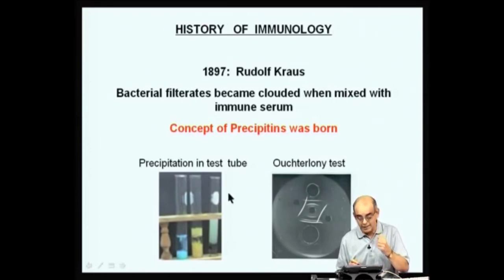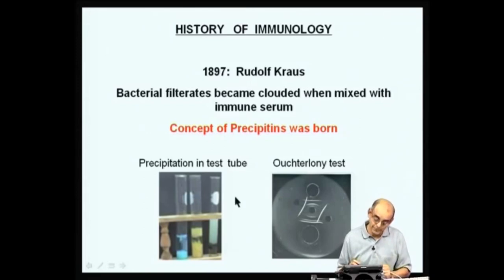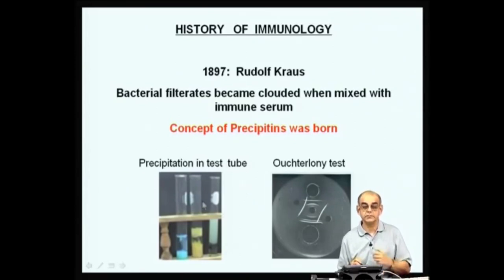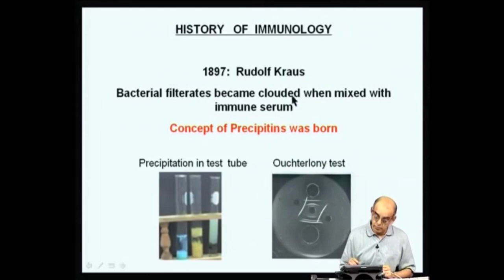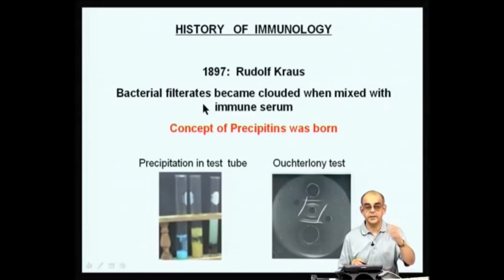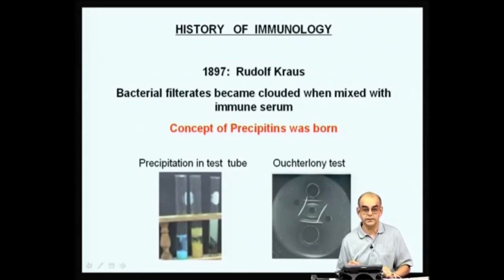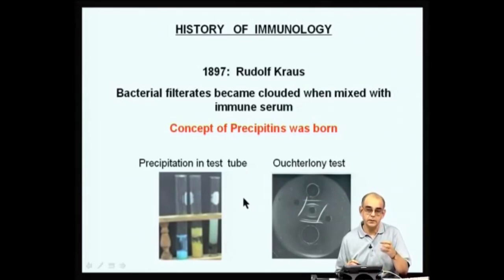Rudolph Kraus found that when you took the immune serum prepared from challenged or injected animals, they had the ability to cloud bacterial filtrates. In other words, you grow bacteria, spin them down, remove the bacteria and take the filtrate, and when you mix it with this anti-serum, there was a precipitate — as shown here in the test tube. In fact, this developed into some sort of a quantitation for the antigen-antibody complex. Antigen meaning that which was injected into the animal to produce this antibody, and therefore it is called as an immunogen — whatever substance combines with the antibody in the test tube is called the antigen.